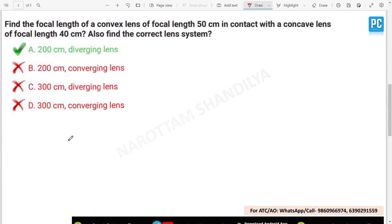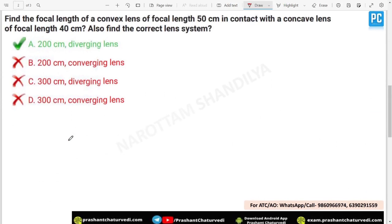Find the focal length of a convex lens of focal length 60 centimeter in contact with a concave lens of focal length 40 centimeter. Also find the correct lens system. If you had watched the lecture, then I had told you one very important thing that there can be a combination of lenses, and those lenses can be in direct contact or there can be some distance between both the lenses. In that, we had studied the application of microscope, telescope, compound microscope. In those cases, there is a distance between two lenses.